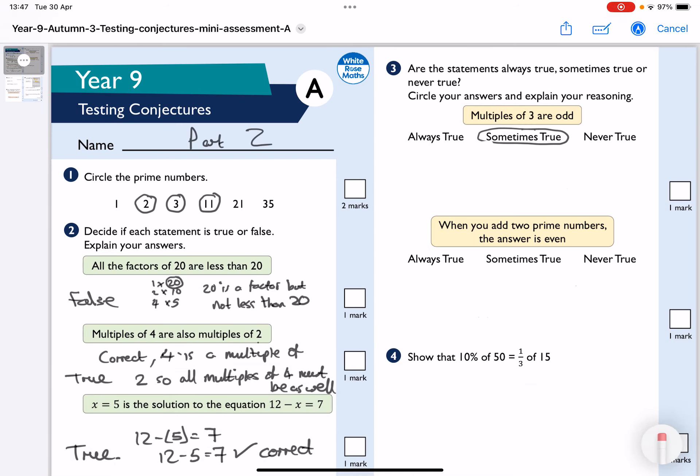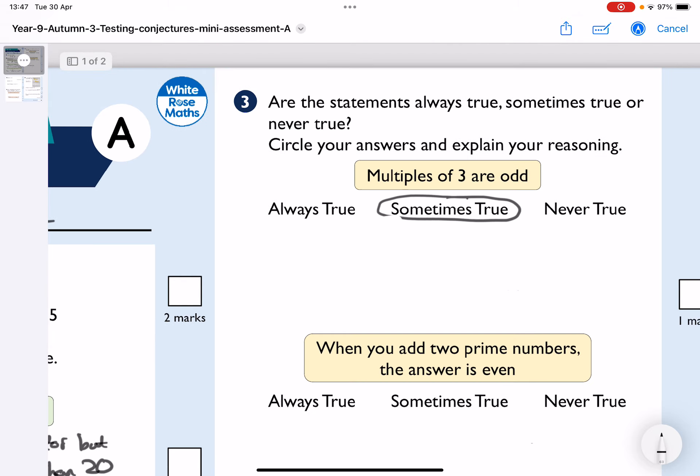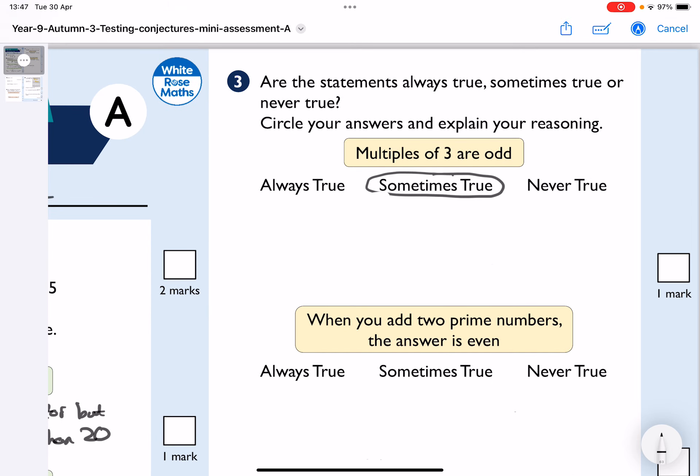Okay, here we have testing conjectures, part two, for year nine. So, I've already answered this one. Are the statements always true, sometimes true, or never true? Multiples of three are odd.